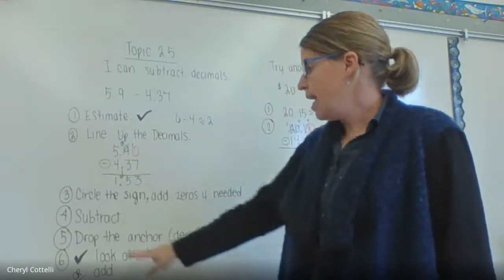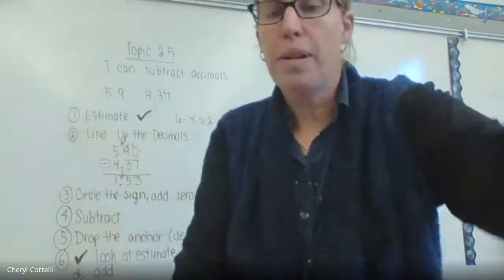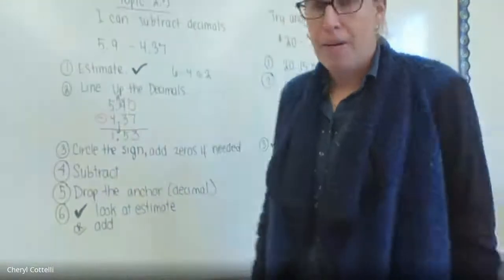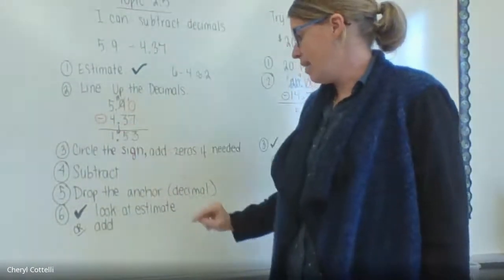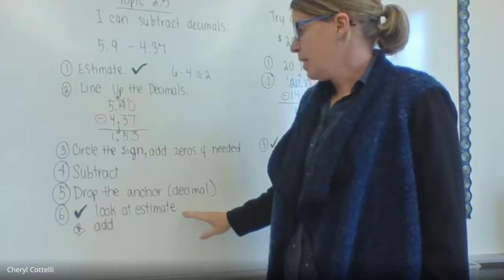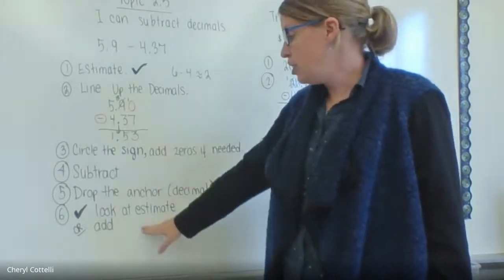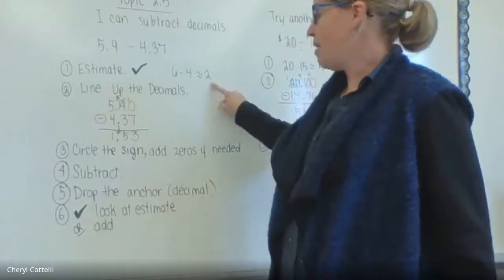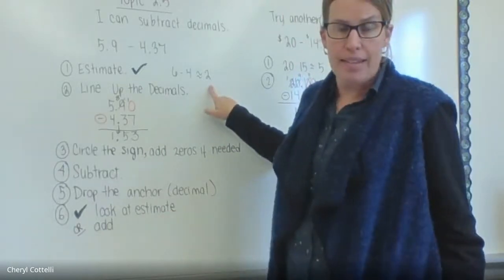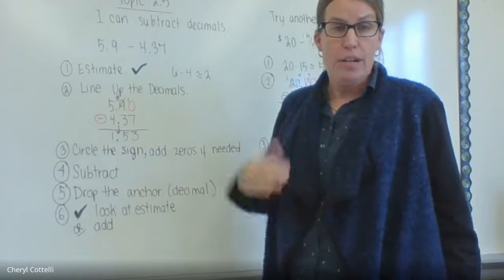Step five would be drop the anchor, or bringing down the decimal. It just looks like a little anchor. Bring down the decimal, so we have an answer of 1.53. We're going to check by looking at my estimate, so 1.53 is close to 2, so we know that we probably got it right.